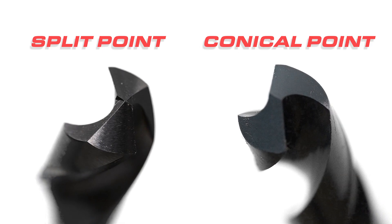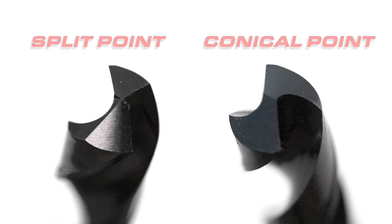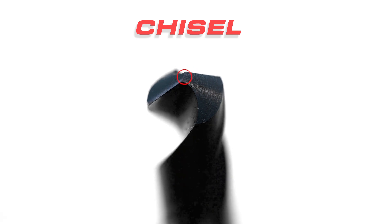A split point has material ground away from around the chisel. This creates a second pair of cutting edges. The chisel starts the hole by scraping material away and the cutting edges take over from there.